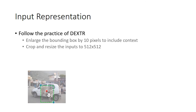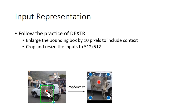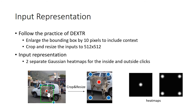In order to fit the IOG inputs into a neural network, we follow the practice of DXTR by relaxing the bounding box obtained, followed by cropping and resizing. Lastly, we create two separate heat maps for the foreground and background inputs and feed these into a neural network for segmentation.